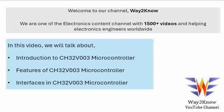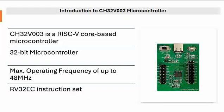In this video we are going to talk about the CS32V003 microcontroller — its features — and then we will also talk about the interfaces. We will talk about the architecture and other details in the upcoming videos. The CS32V003 is a RISC-V based core microcontroller.